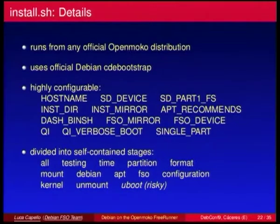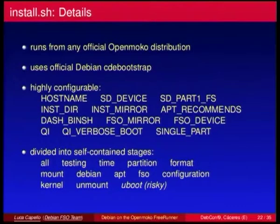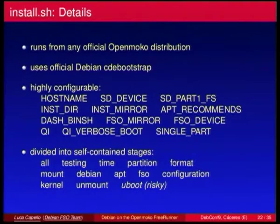The installer can run from any official OpenMoko distribution, making it distribution-agnostic. It uses the Debian cdebootstrap package to install a minimal Debian — even less than a standard installation. It's configurable by different variables and divided into four self-containing stages, so you can test whether your distribution has everything needed, run everything, or resume if something fails. For example, you can start installation at home with a fast connection, then restart later. The script has been heavily tested and adapted to every change in Debian over the past year.